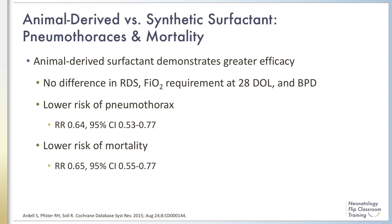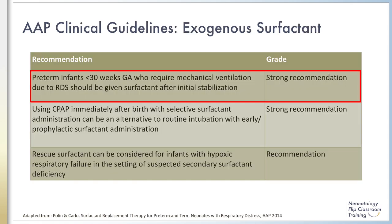Although clinical trials have demonstrated that both types are effective, there is evidence to suggest greater efficacy with animal-derived surfactant products. There is no difference in RDS oxygen requirement at 28 days of life and BPD; however, a lower risk of pneumothoraces with animal-derived surfactants has been demonstrated in a 2015 Cochrane review. The same Cochrane review also found a decreased risk of mortality with animal-derived versus synthetic surfactant.